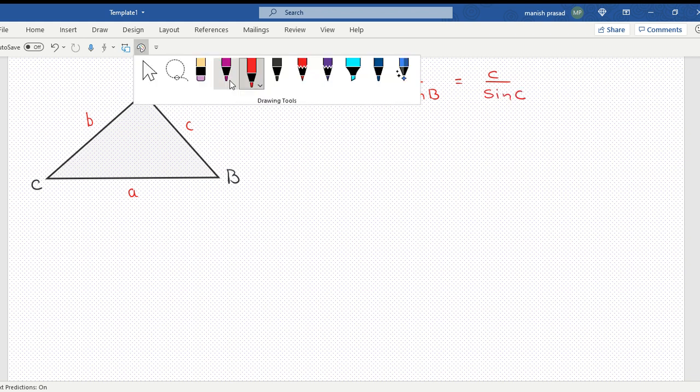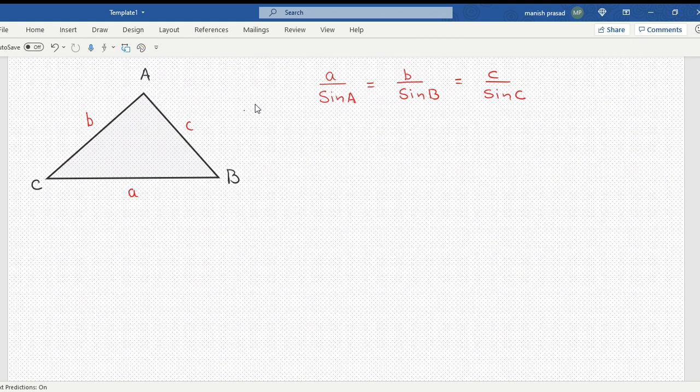You could just reciprocal it also. You could write it like this: sine A upon A equals sine B upon B equals sine C upon C. Any way you want to use it, you can use it.